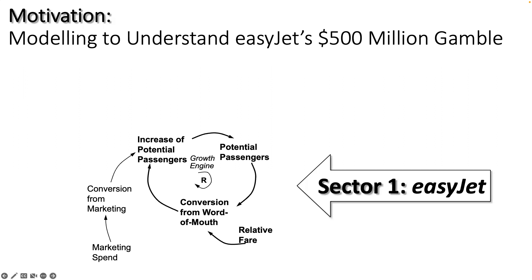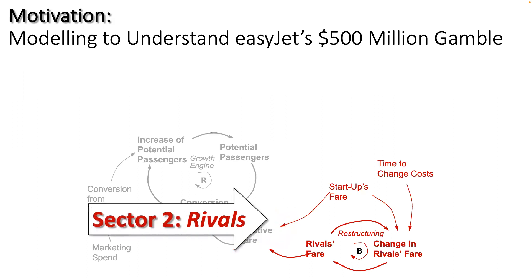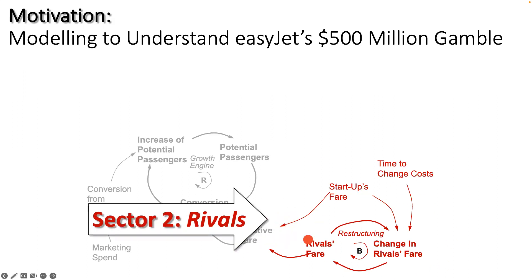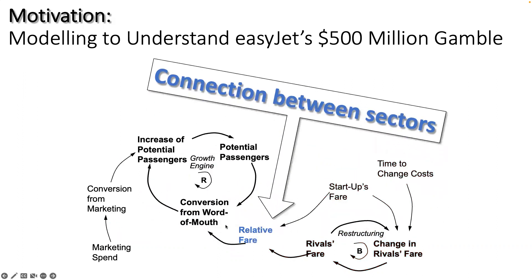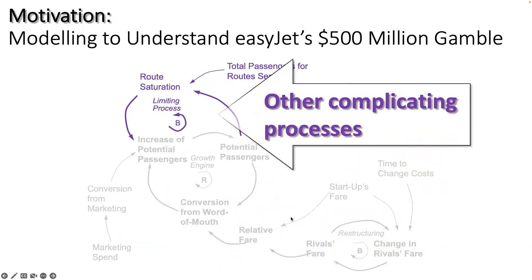Thinking about last time, we started with a growth sector inside EasyJet — modeling just a focal company for strategic modeling. We had that sector, and then we built a sector for their rival. We didn't have to model all the details of the rival; we modeled enough to give us a response to actions made inside the company we cared about. And then there was a connection between those two, plus additional complicating processes added on.